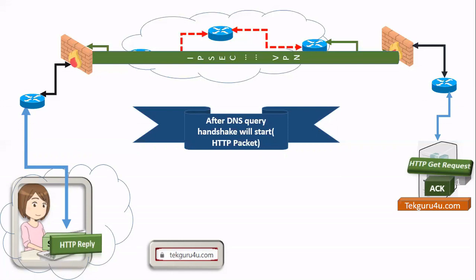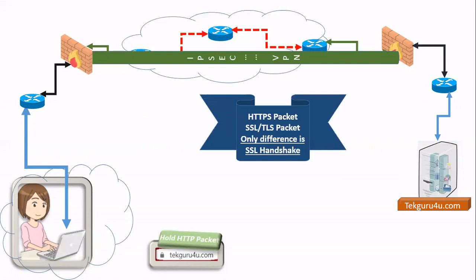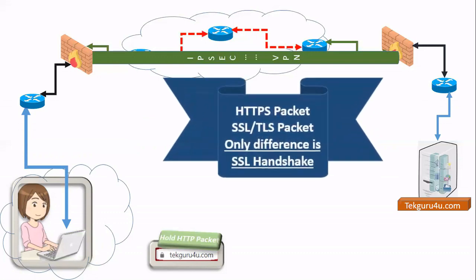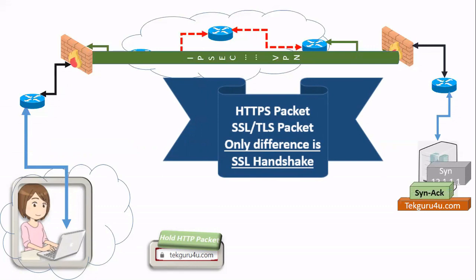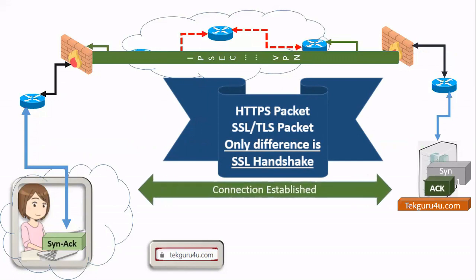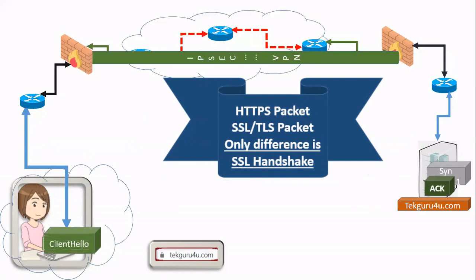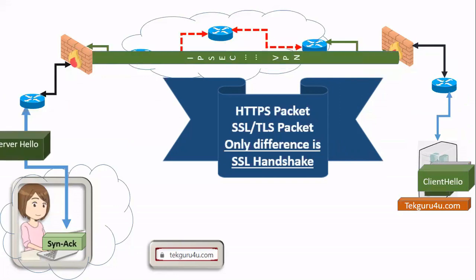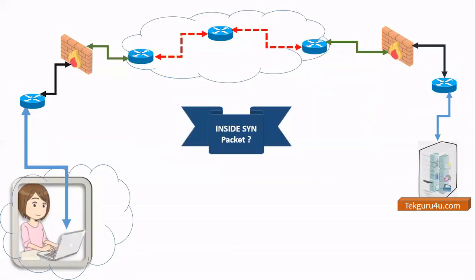Now let's take an example of HTTPS. There is no difference between HTTP and HTTPS — it's the same protocol, but HTTPS is secure. The same three-way handshake happens and the connection is established. If it is HTTPS, the first packet after three-way handshake will be a Client Hello, then it will get a Server Hello. There are a lot of processes in the SSL handshake. If you want a video on that, please do comment — I will create an animated video on SSL handshake also.